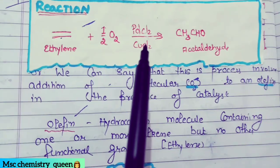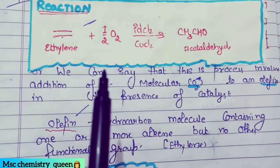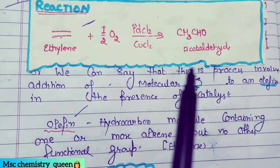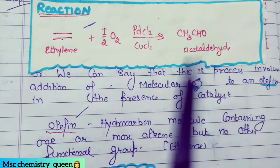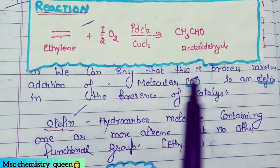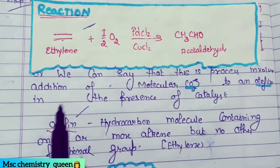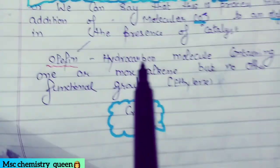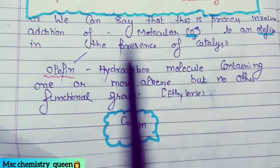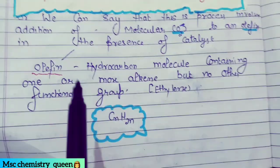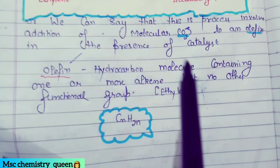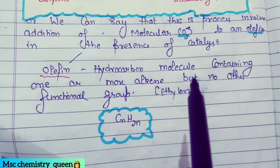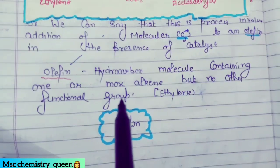In the presence of catalyst, this is called the palladation reaction. Now, what is an olefin? Olefin is a hydrocarbon molecule containing hydrogen and carbon, which is essentially an alkene with one or more double bond functional groups. It has a general formula CₙH₂ₙ, and ethylene is one form of olefin.